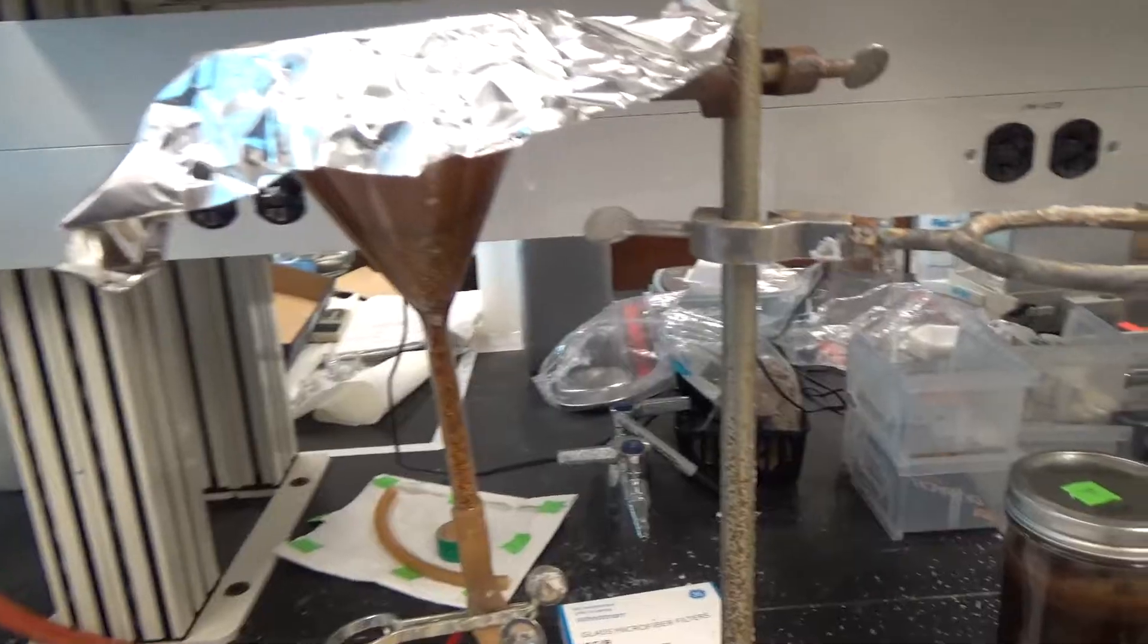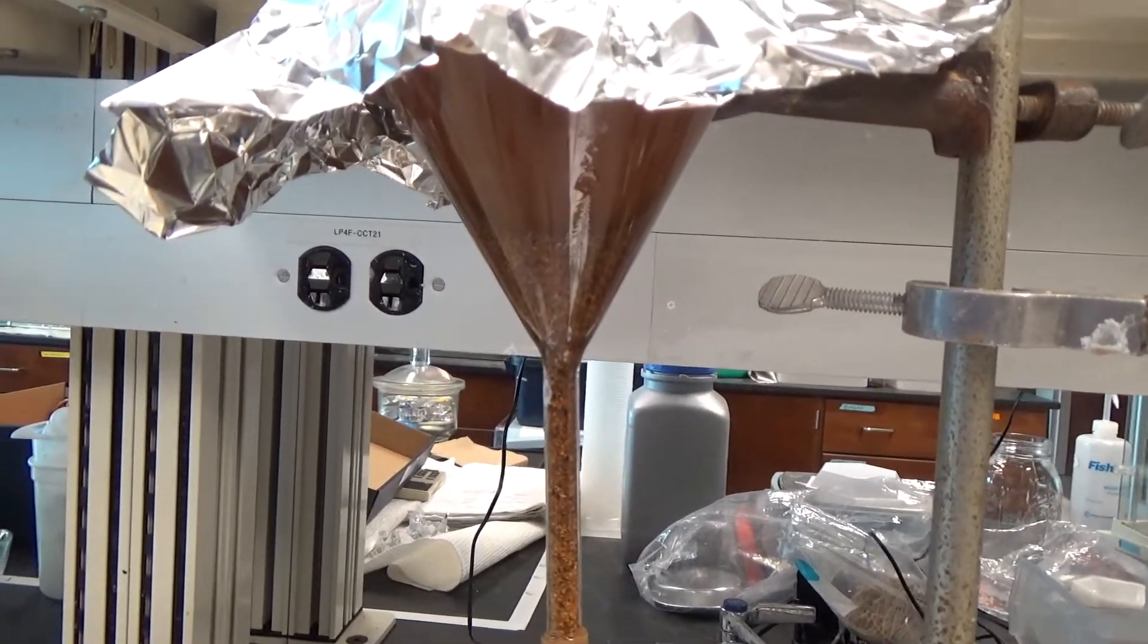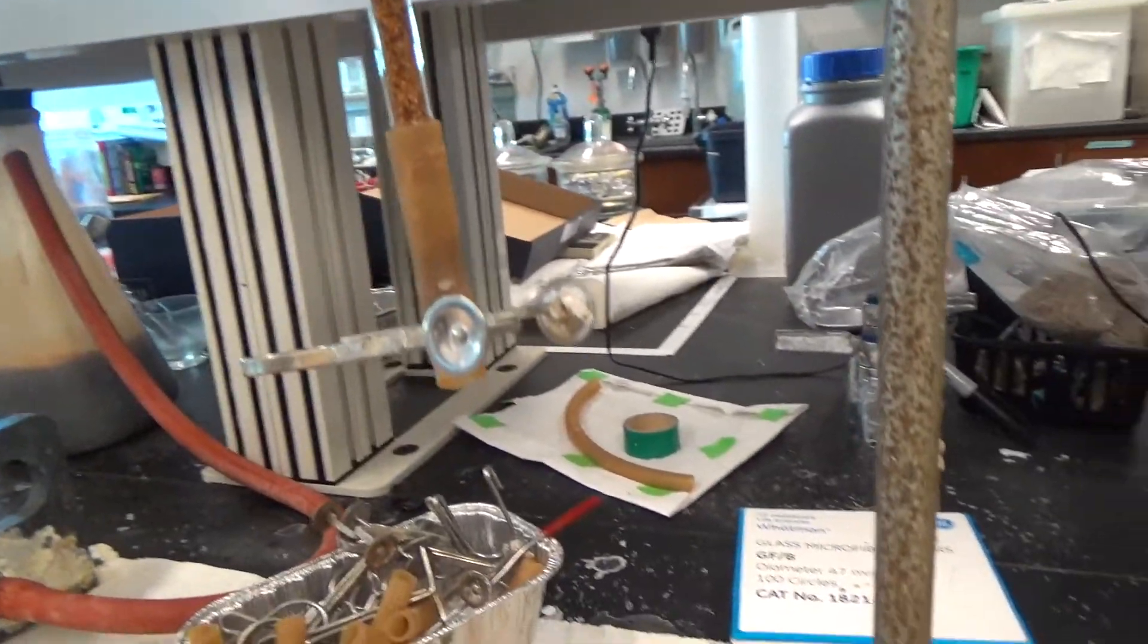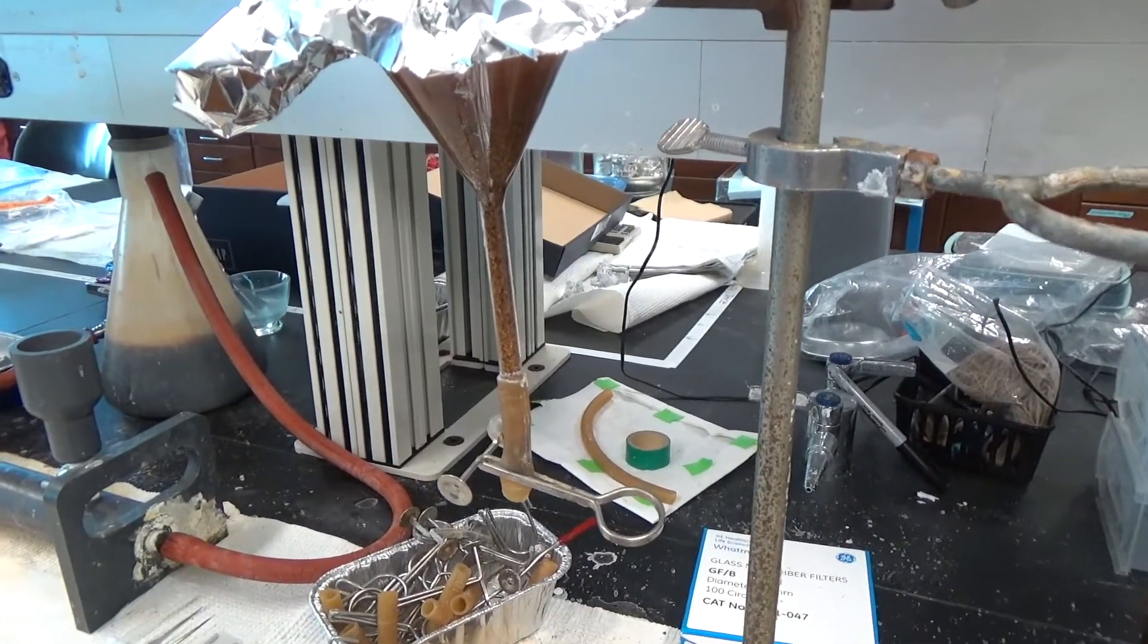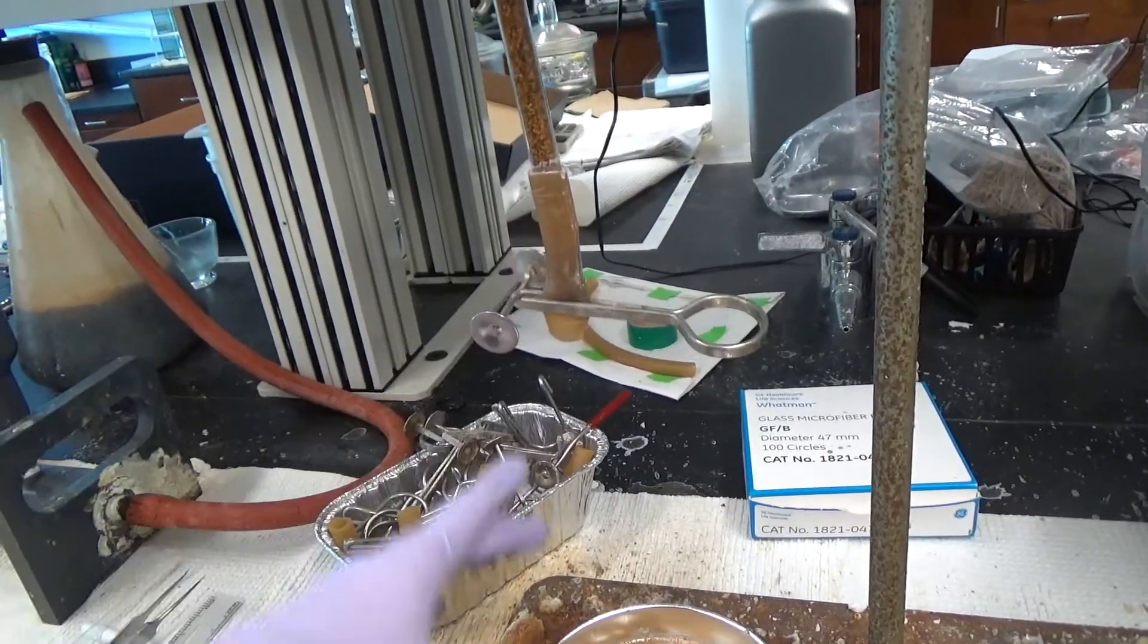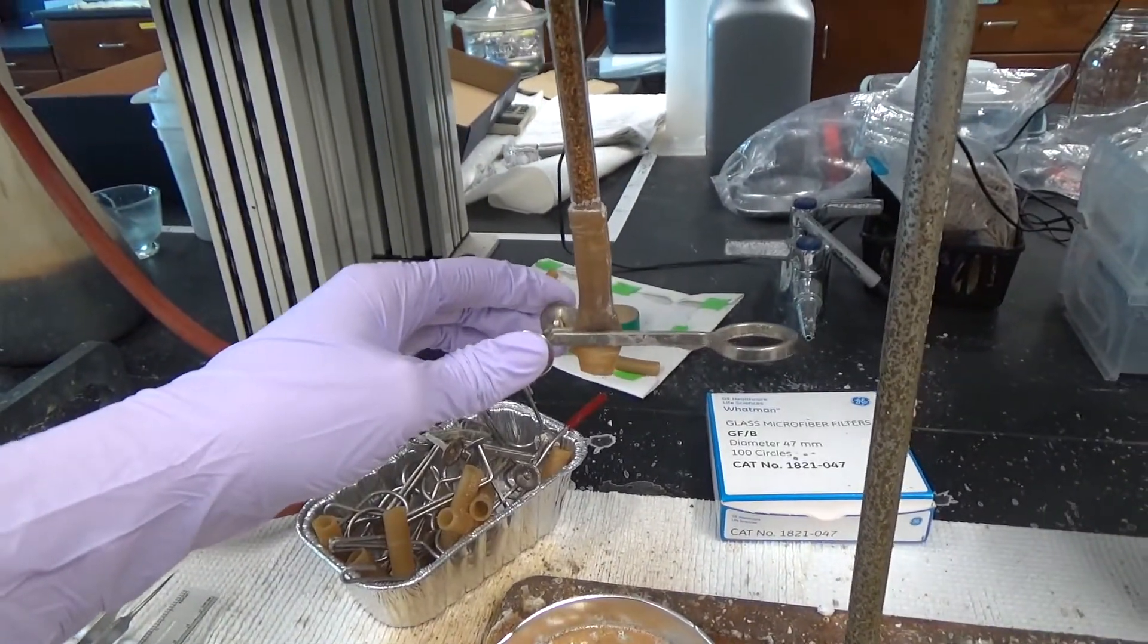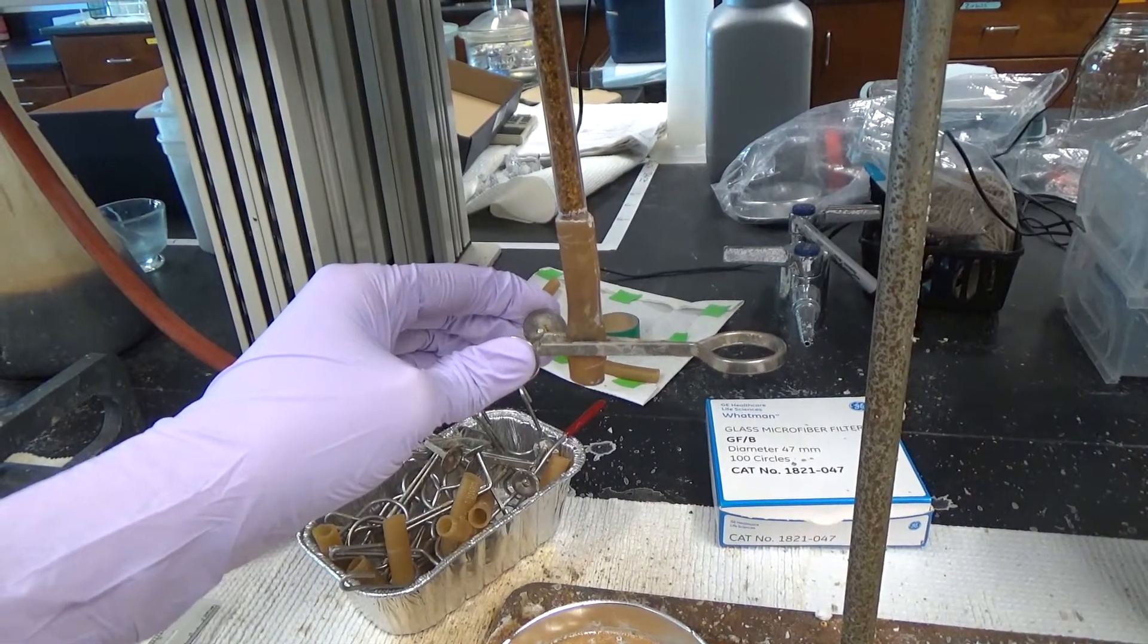Cover the funnel with foil and allow the particulates to settle for at least 60 minutes. Drain the sediment into a storage container or your aluminum weigh boat without draining any of the liquid part of the sample. You can either discard the sediment or keep it to look further for microplastics.